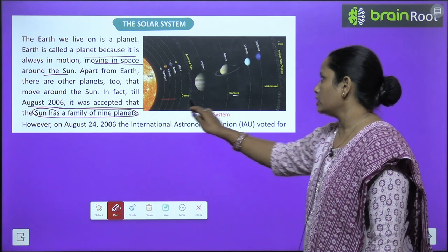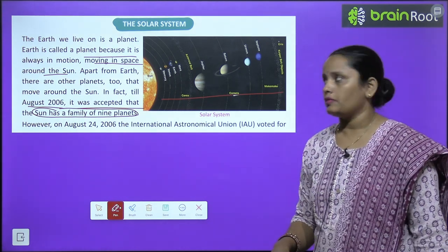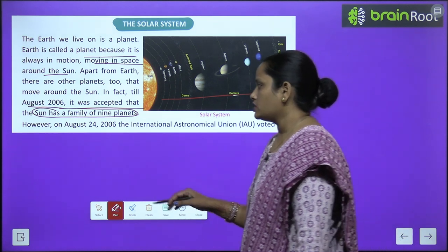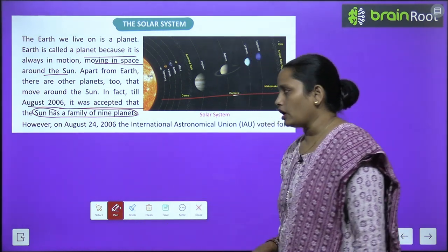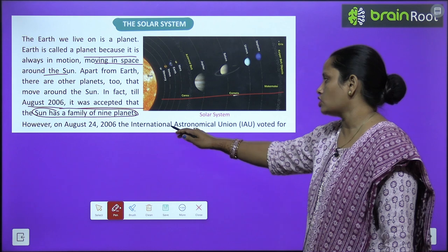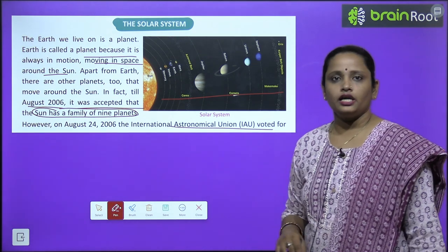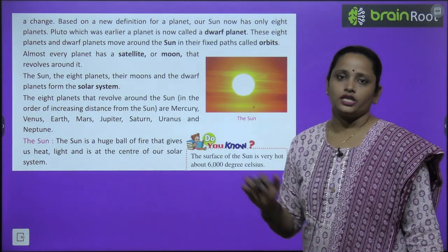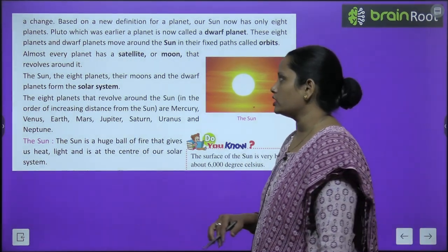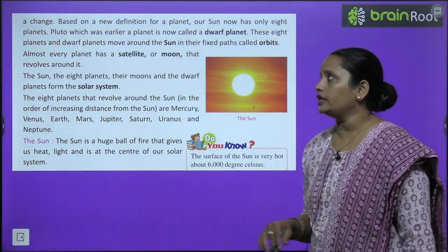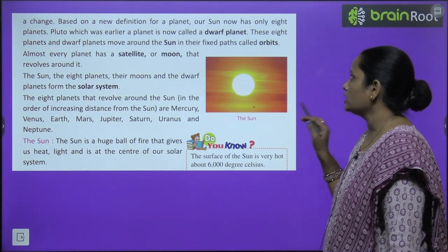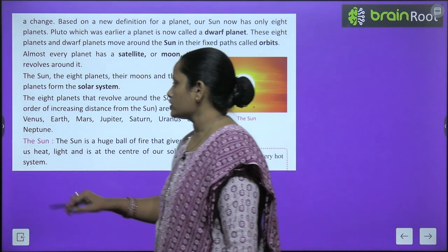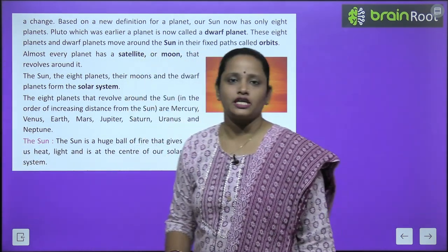We had a total of nine planets. However, on 24th August 2006, the International Astronomical Union (IAU) voted for a change. Based on a new definition for the planet, our sun now has only eight planets.